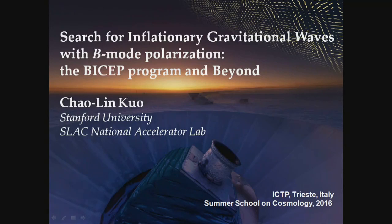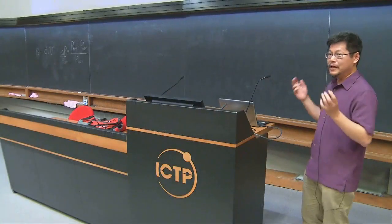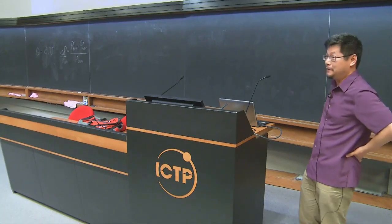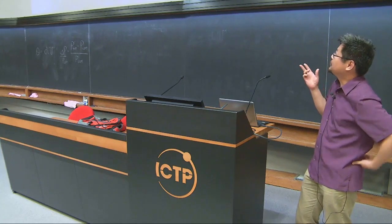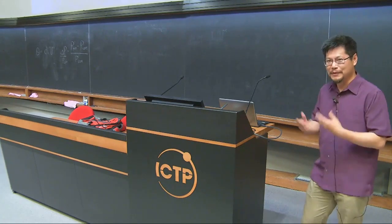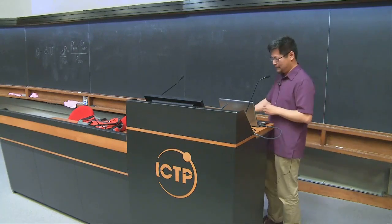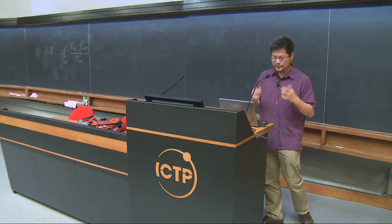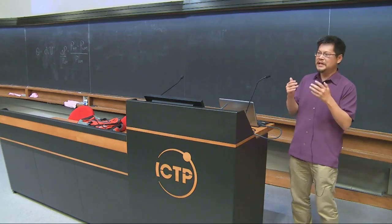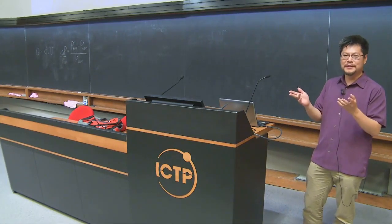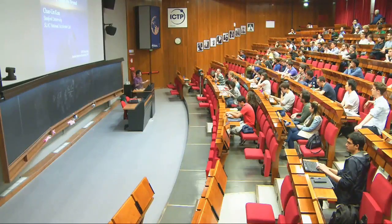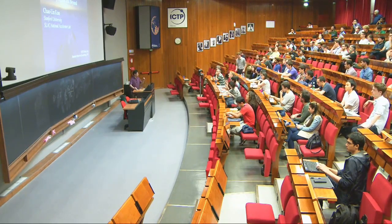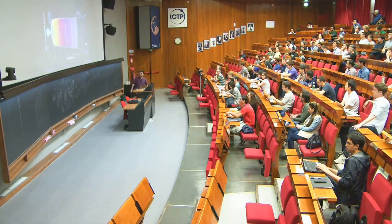The key point here is not only that gravitational waves have been discovered by LIGO recently — we knew they existed even before that. The key here is we're trying to look for primordial gravitational waves that came from the beginning. It's kind of interesting: if you look at the edge of space, which is a black hole, you use gravitational waves; if you look for the edge of time, you look for gravitational waves as well. Maybe that's not a coincidence.